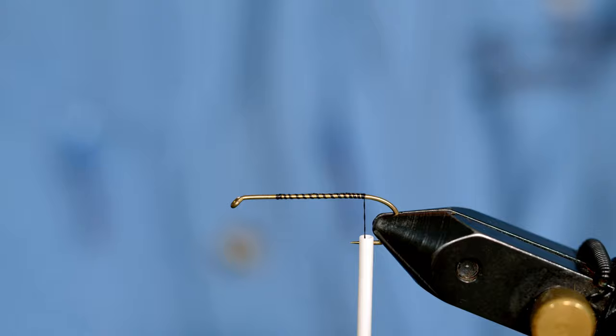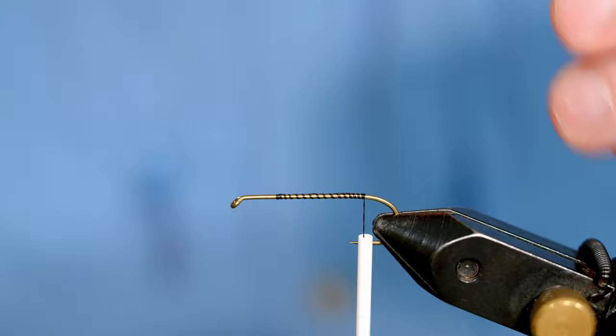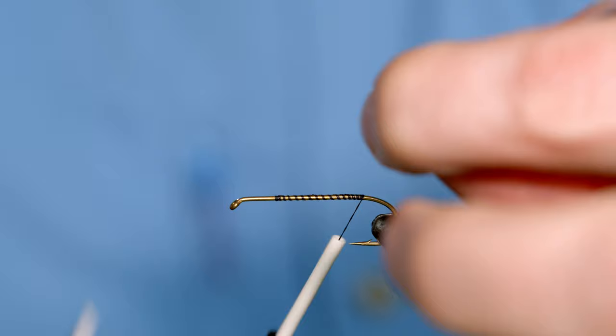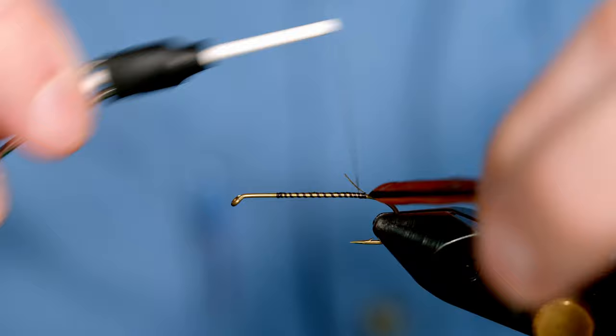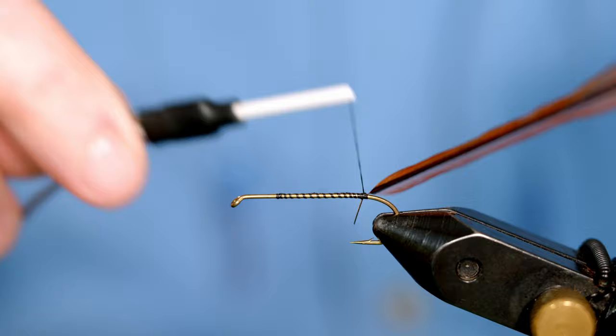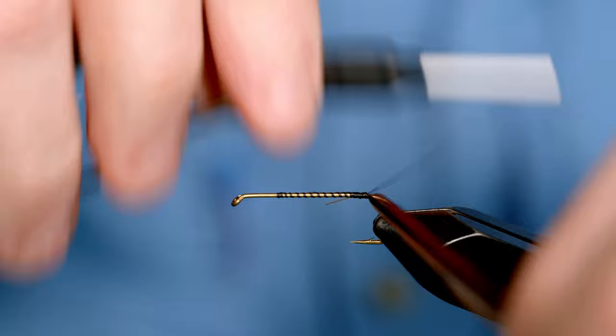The first thing I'm going to do is tie in the hackle. To prep the hackle you want to strip some of the fibers off of the stem, and then we're going to lay the hackle vertically to the hook, and then we're going to do a figure eight around the hackle stem. Then we're going to tie the rest of the stem to the hook.